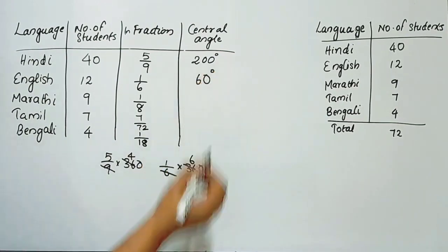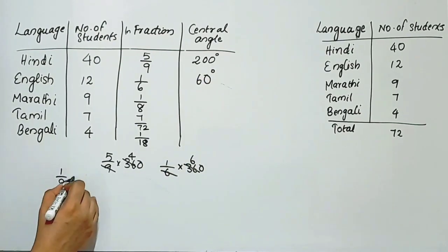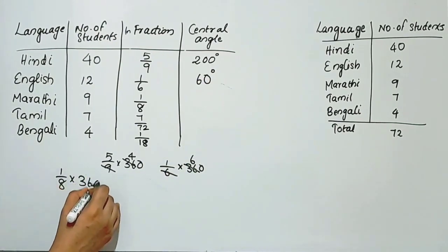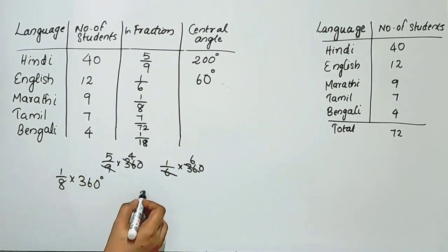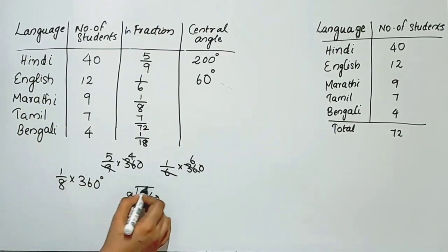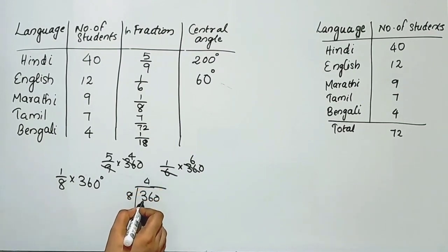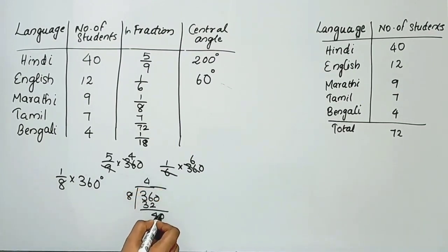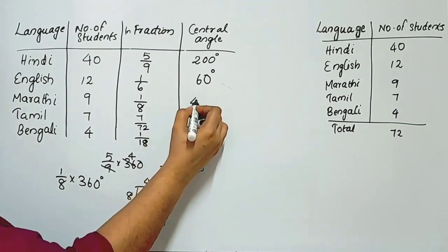Now we calculate the central angles. Hindi: 5 by 9 into 360 degrees equals 200 degrees. English: 1 by 6 into 360 degrees equals 60 degrees. Marathi: 1 by 8 into 360 degrees. Dividing 360 by 8 gives 45 degrees.